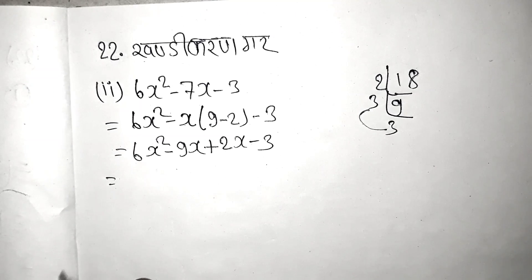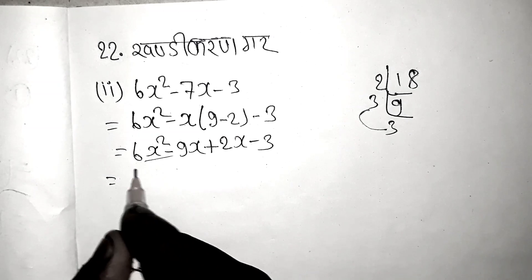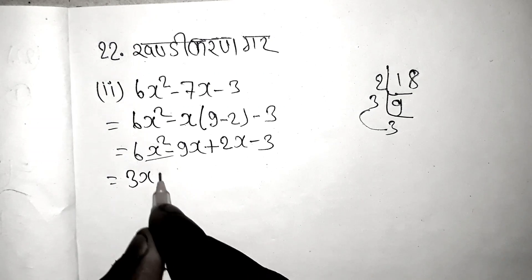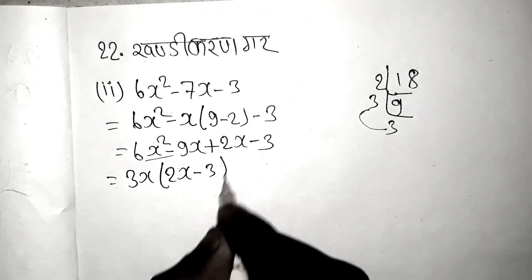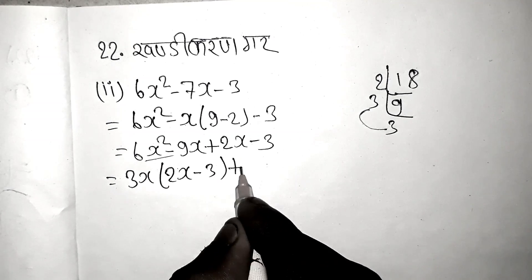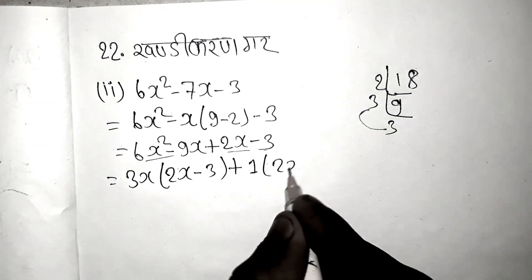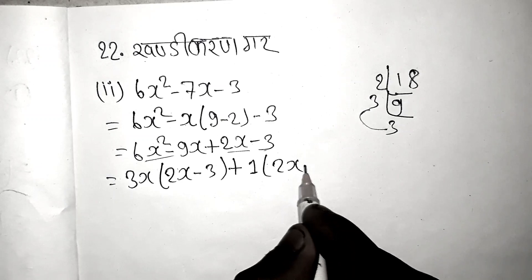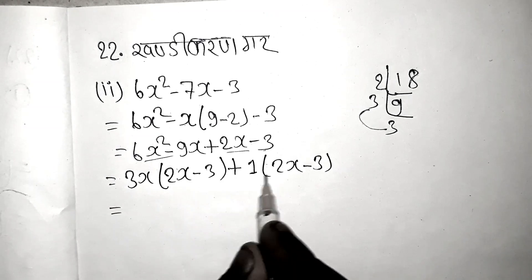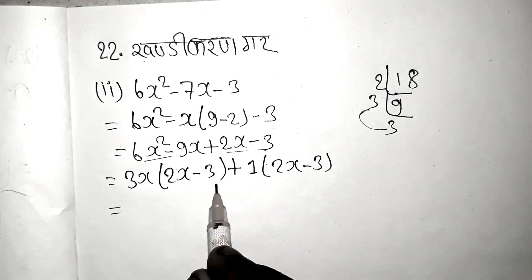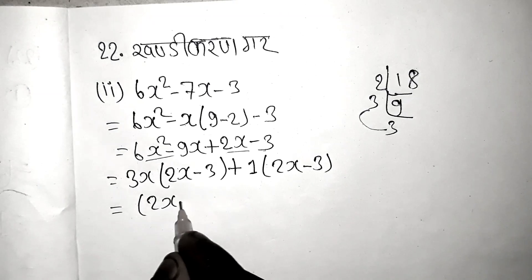So you can see that 2x is common. 2x is common, and then x is common, and then 2x is common. We get 2x minus 3 and will factor out 2x minus 3.